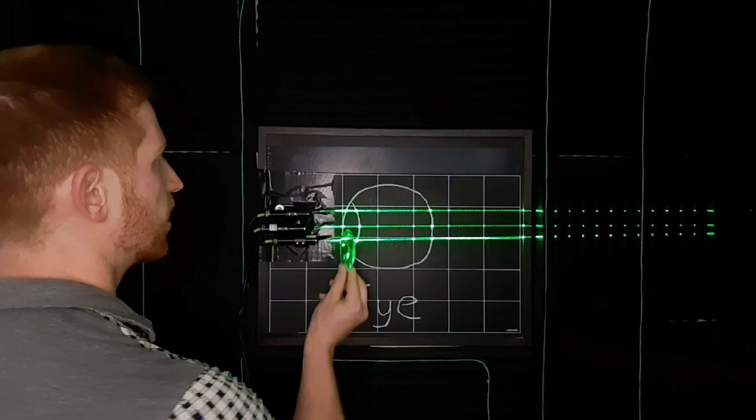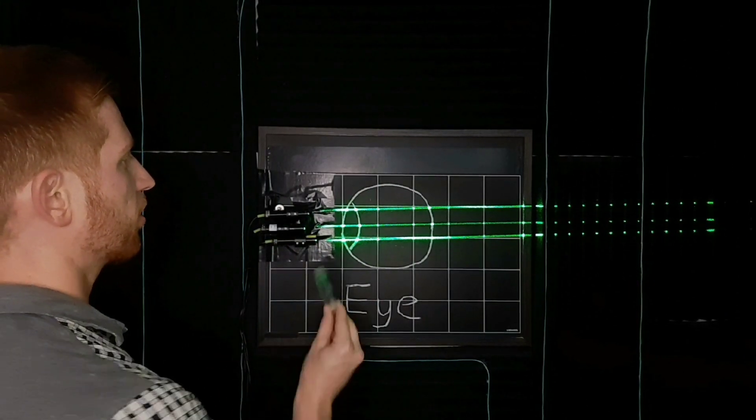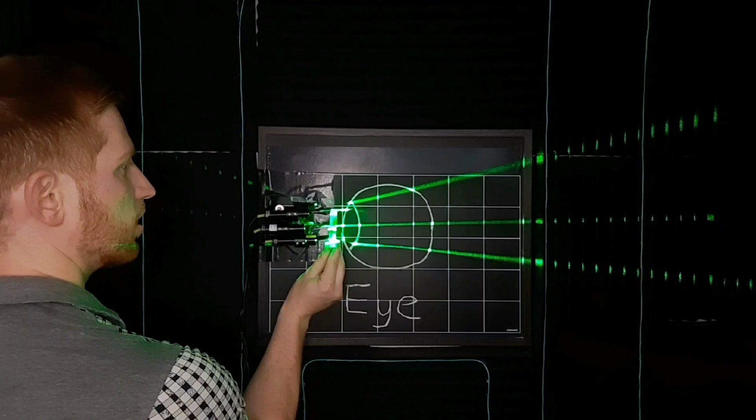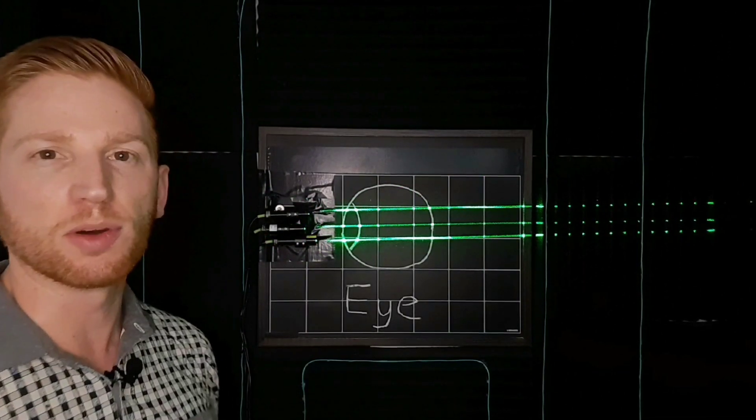Positive or plus lenses, like we've been showing, take in light and focus that down to a point, while on the other hand, negative or minus lenses spread light out. So these light rays are getting further away from each other instead of focusing down to a point.